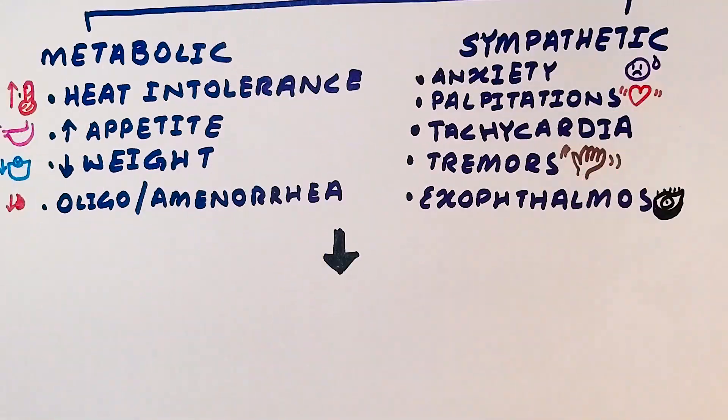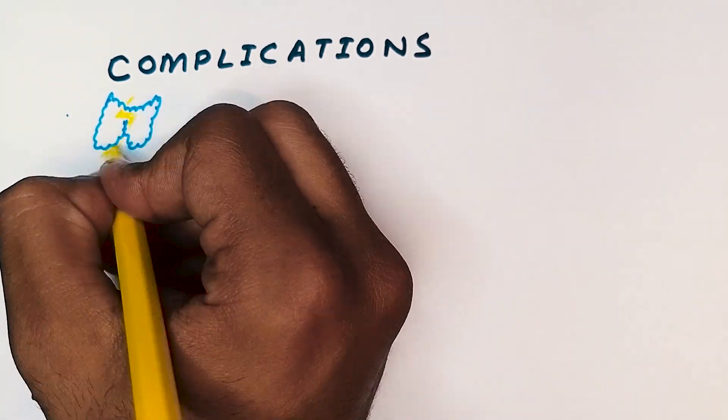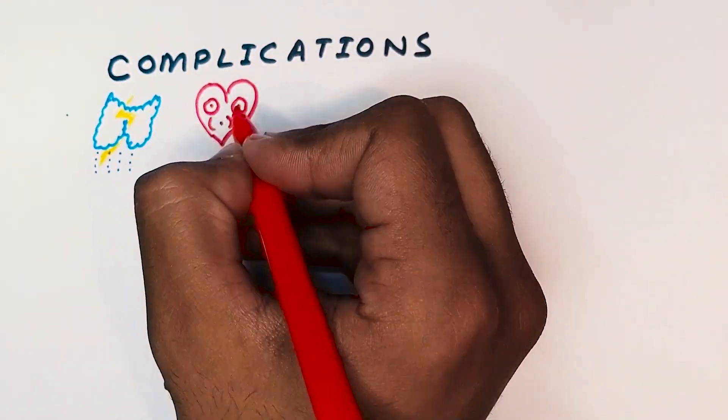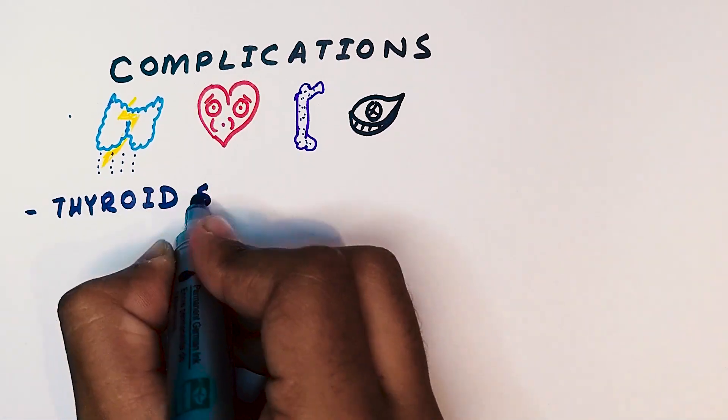If left untreated, hyperthyroidism can lead to various complications. One serious complication is a thyrotoxic crisis, also known as thyroid storm, which is a life-threatening condition characterized by severe hyperthyroidism.